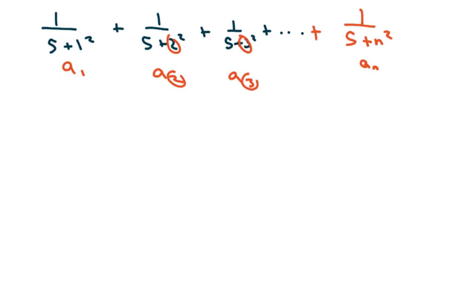I'm going to go ahead and still do the comparison test. 1 over 5 plus n squared, and compare it to 1 over n. If I plug in any numbers, this side, the left side, is going to be always less than or equal to 1 over n for all n. Therefore, the series is divergent.